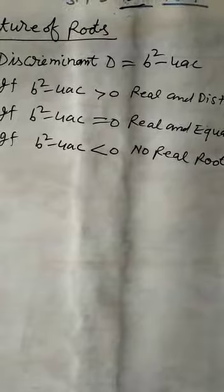Discriminant D equal to B square minus 4AC, where A, B, C come from the general form: AX square plus BX plus C equal to 0.